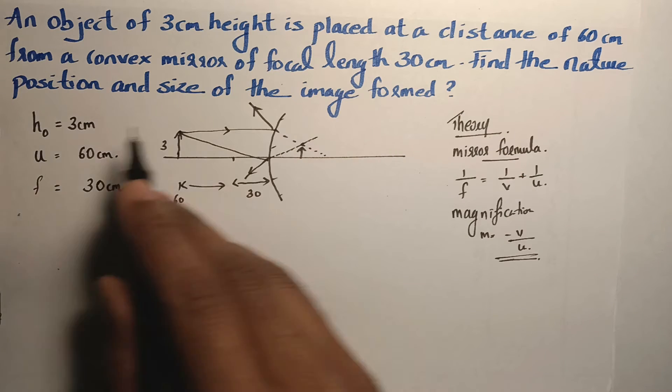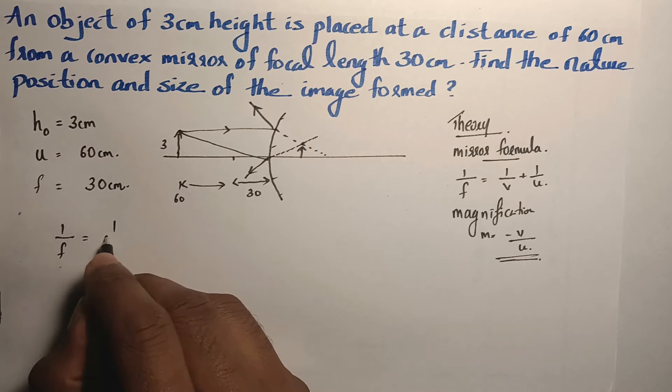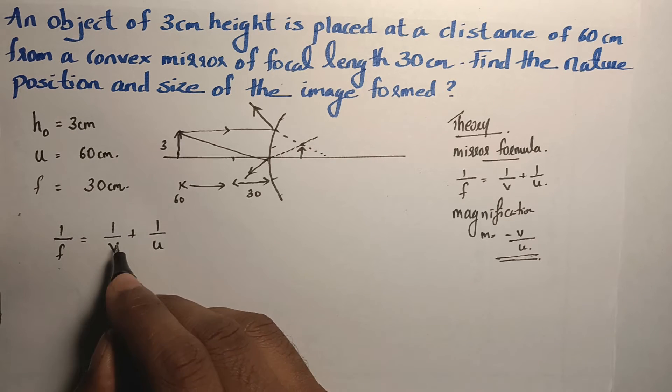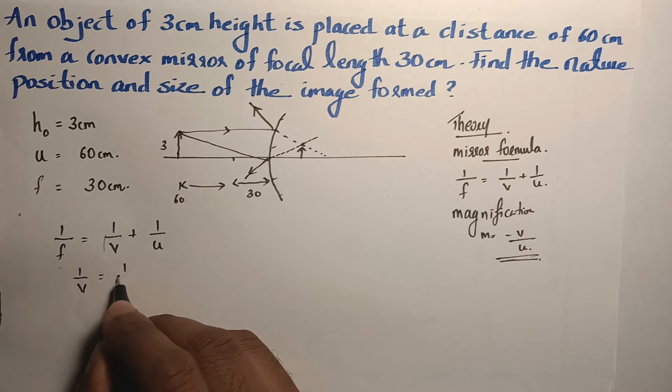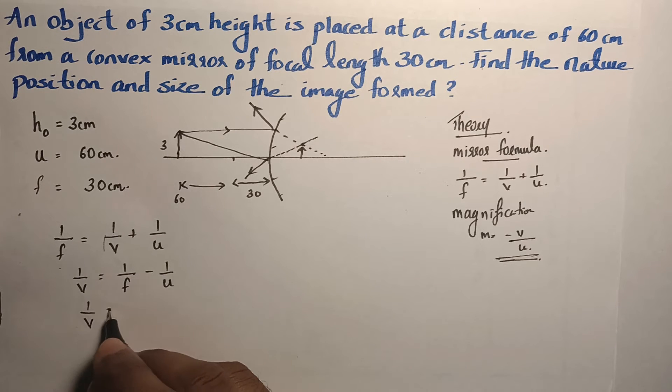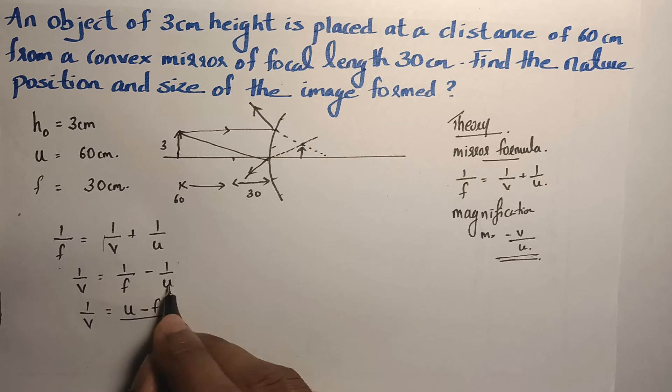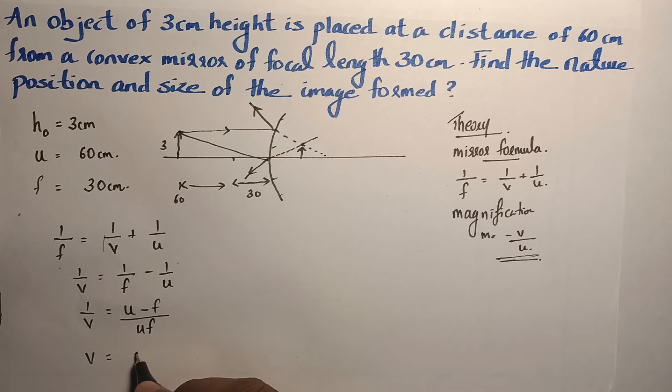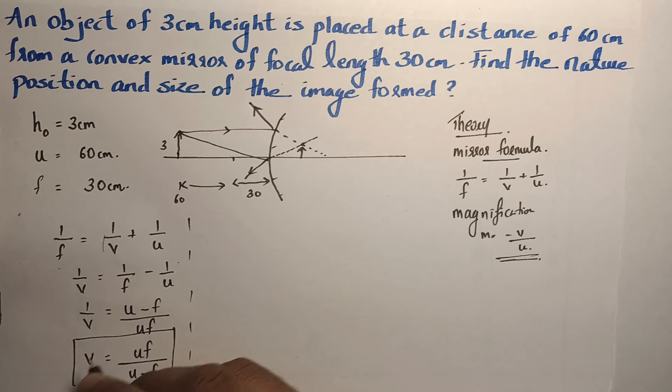First, we will use mirror formula to find out the position of the image. By mirror formula, 1 by F is equal to 1 by V plus 1 by U. We need V, so we will move U to the other side. 1 by V is equal to 1 by F minus 1 by U. On cross multiplying, 1 by V is equal to U into 1 is U minus F into 1 is F by multiple product of the denominators UF. V is equal to, we will take the reciprocal on both sides, UF by U minus F. This equation can be noted as a shortcut. Using that equation, we will find out the value of V.